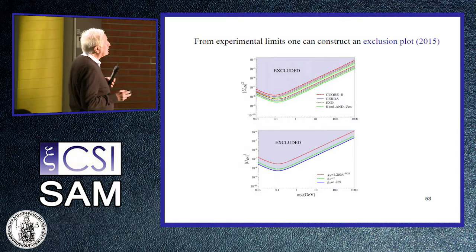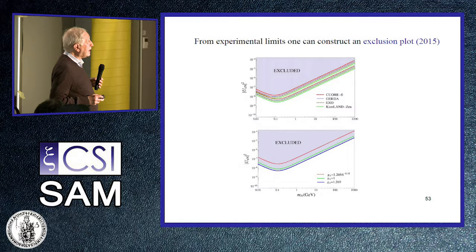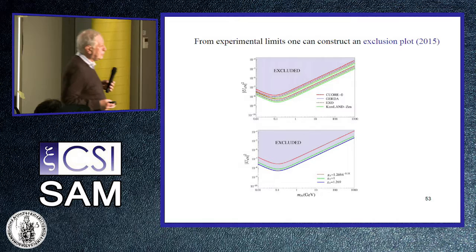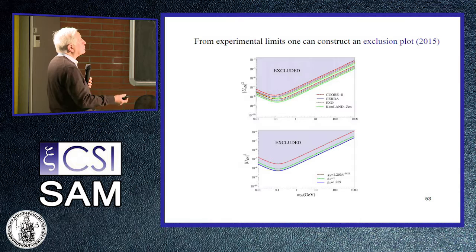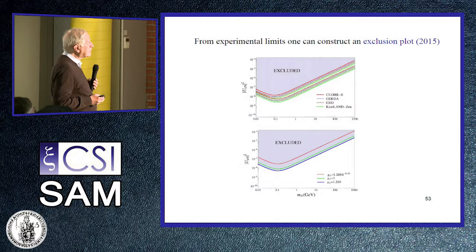From experimental limits, we can construct an exclusion plot of what values are excluded. The plot shows the sterile neutrino mass in GeV ranging from MeV to TeV on the horizontal axis. The nuclear matrix elements have a peak at 100 MeV — so if the sterile neutrino mass is 100 MeV, there is a considerable enhancement of the nuclear matrix elements, corresponding to a minimum in the exclusion plot. Different lines represent various experiments: KamLAND-Zen, EXO, GERDA, and CUORE-0.